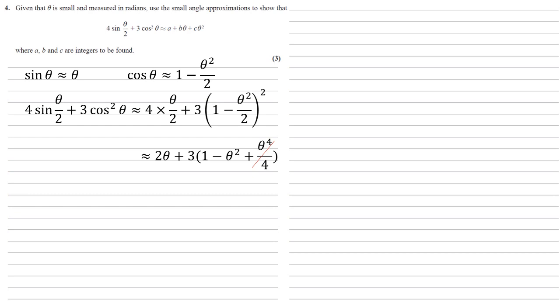If we expand the bracket, we'd end up with 3 times 1 and 3 times -θ², so altogether we get 3 + 2θ - 3θ², which is in the form that we needed.